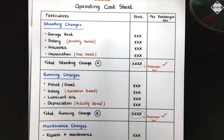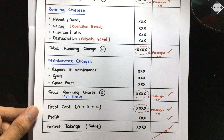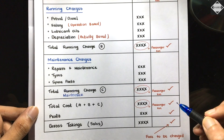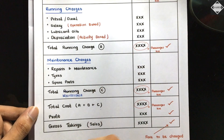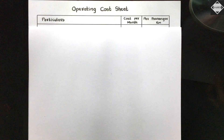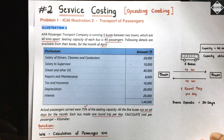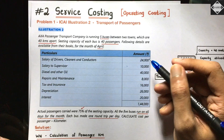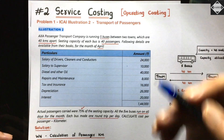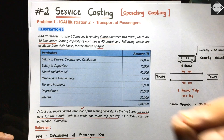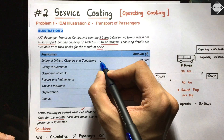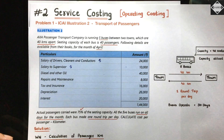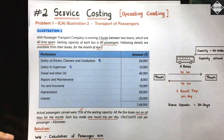We add up all three categories to get total cost, then divide by passenger kilometers to get cost per passenger kilometer - that's the requirement. Now classifying the given costs: Salary of drivers, cleaners, and conductors - this is fixed cost, payable regardless of whether the bus runs - so it goes under standing charges. Salary to supervisor - also time-based, so standing charges. Diesel and other oil - incurred only when buses run, so this is running charges (variable cost).